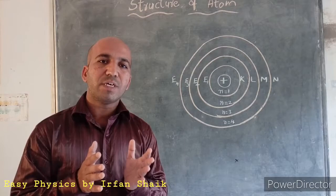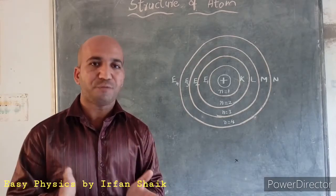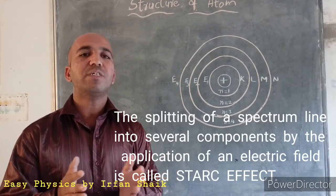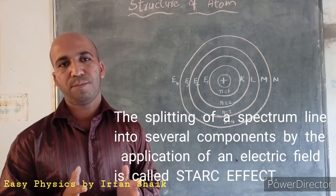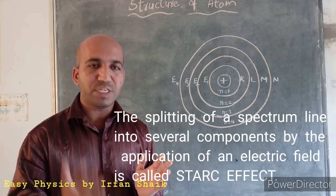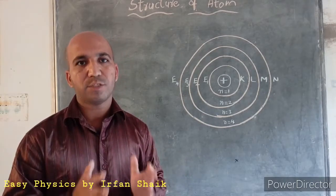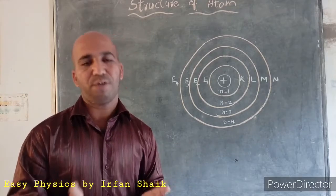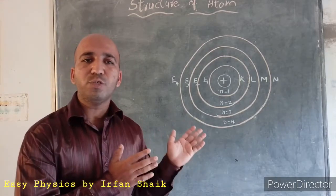When spectral lines split into many different lines in the presence of a strong electric field, this phenomenon is called the Stark effect. So to summarize: the Zeeman effect is the splitting of spectral lines in the presence of a very powerful magnetic field, and the Stark effect is the splitting of spectral lines in the presence of a very powerful electric field. These are the main points to remember from Bohr's atomic model.